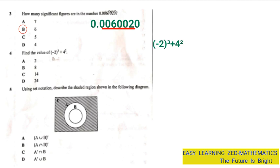I'm going to expand that — multiply negative 2 by itself three times: negative 2 times negative 2 times negative 2, plus 4 multiplied by itself twice. Negative 2 times negative 2 gives positive 4, then positive 4 times negative 2 gives negative 8. Plus 4 times 4 gives 16. Simplifying: negative 8 plus 16 gives 8.